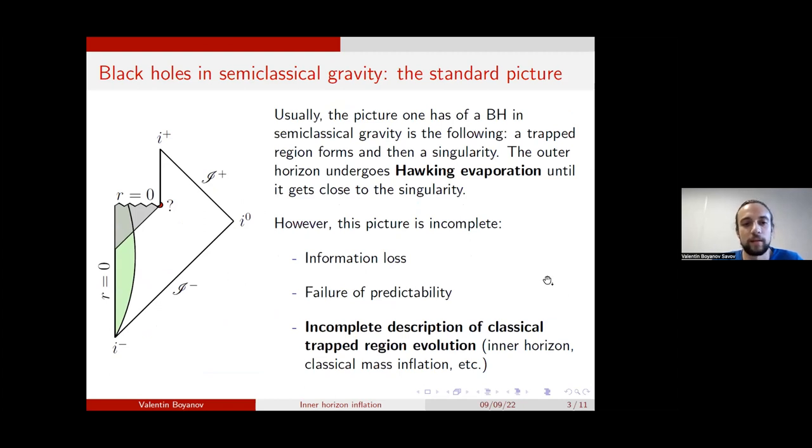Now, black holes have been studied in the context of semi-classical gravity for a long time. And the standard picture of what their evolution is believed to be looks something like this. You have collapse, in which the matter becomes dense enough for a trapped region to be formed. And eventually, a singularity is also formed. And on the outside of the black hole, Hawking evaporation is produced. And at the same time, the horizon of the black hole shrinks. So the apparent horizon moves inwards until eventually it reaches the origin.